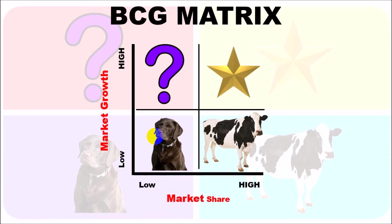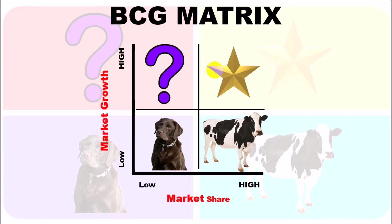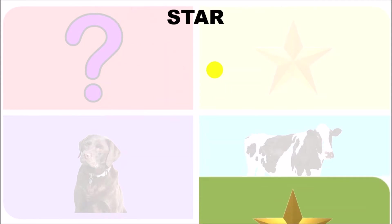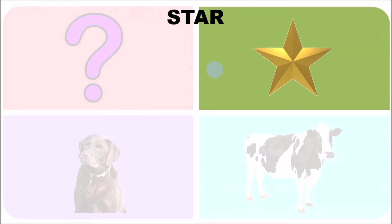Now let's look at the stars, the question marks, the cash cows, and the dogs in detail — to understand what these mean and how you would classify your products along these four lines. You would use this to analyze your various products competing against each other for resources, manpower, capital investment, and so on.